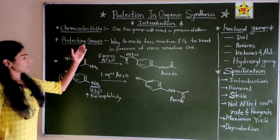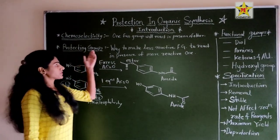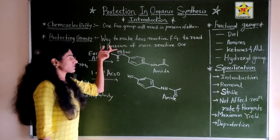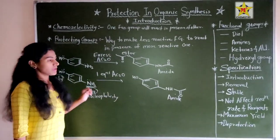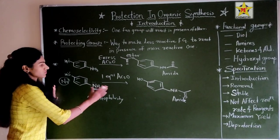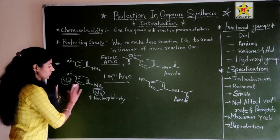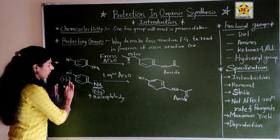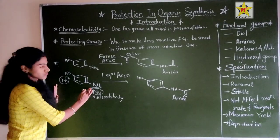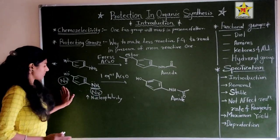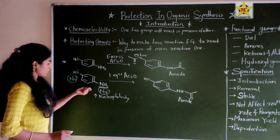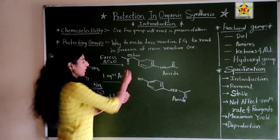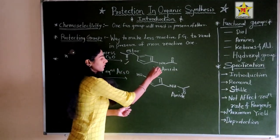Next, protecting groups. A protecting group is a way to make a less reactive functional group react in the presence of a more reactive one. For example, if a compound has two functional groups — OH as well as NH₂ — and I want to get the ester product from OH, not the amide.